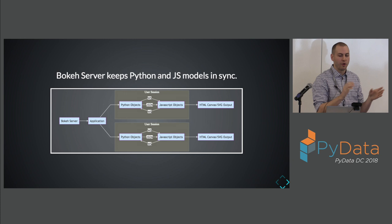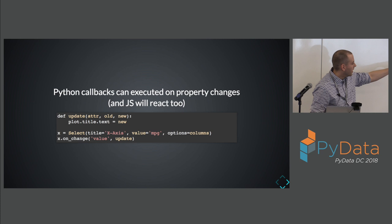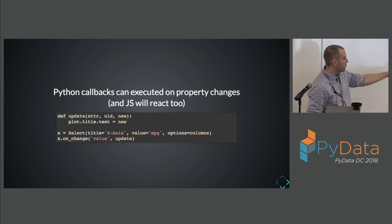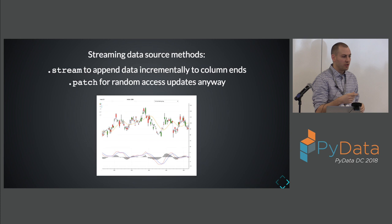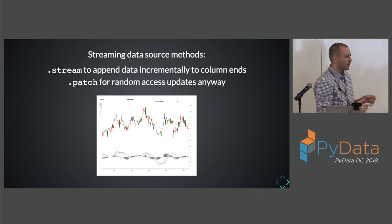Here's an example where a dropdown lets someone pick different values, changing the title of the plot. We have nice utility functions on data source objects to do smarter updates. We can stream data — in the case of a time series getting new data, we don't want to send all historical data to the front end just to add a single element, so we add just the new one. We can also do patching, which is more common for image stuff like tile-based maps where you zoom and want to relay just a specific part of the tile.